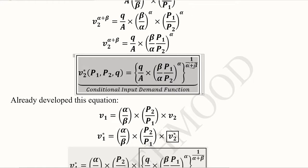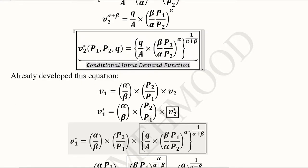We can now call this the conditional input demand function because it deals with output Q as well as the input prices P1 and P2. It is based upon these three independent variables, one of which is Q. This is why it is called the conditional input demand function — a certain condition of output is present.